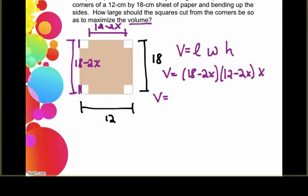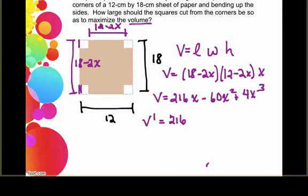Now if we take a moment and go ahead and expand that, and you can pause the video if you need to, then we're going to get 216x minus 60x squared plus 4x cubed. Once I get the equation for what I want to find the maximum or minimum for, the next thing would be to take the derivative. So if I find v prime, I'm going to get that v prime is going to be 216 minus 120x plus 12x squared.